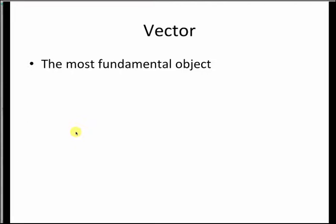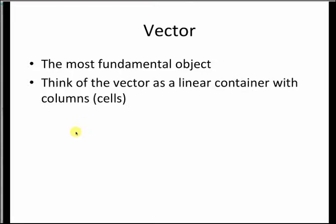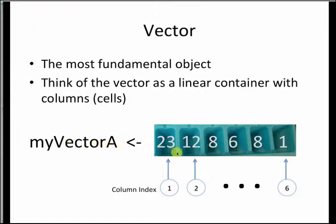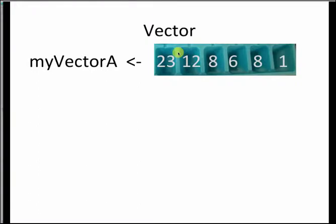A vector is the most fundamental object in the R environment. You can think of a vector as a linear container with columns. It is basically a container with multiple cells arranged in a line, where each cell has an index. The first cell has index 1, the second has index 2, and so on. So if I define a vector called my_vector_a, it currently contains 23, 12, 8, 6, 8, and 1 as integers.